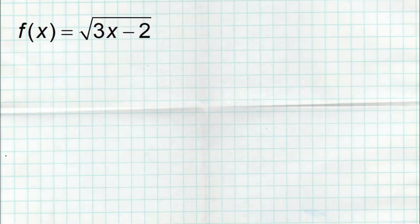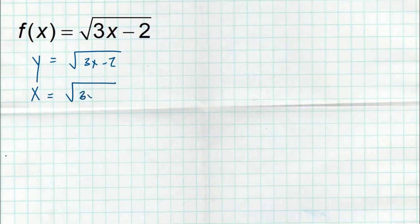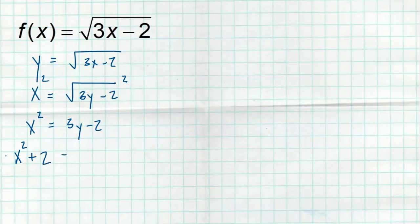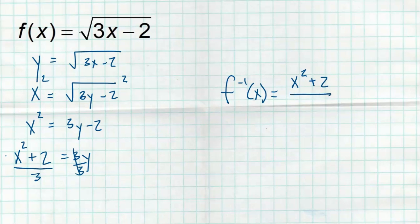Let's do another one with the analytical representation f(x) = √(3x − 2). First, change that f(x) to a y. Then switch all of the x's and y's. Now I need to solve: how do I get rid of the square root? I'm going to square both sides, so I get x² on the left and 3y − 2 on the right. Then I add 2 to get x² + 2 = 3y, and then divide everything by 3. Those threes cancel, and for my final step I identify this as the inverse function: f⁻¹(x) = (x² + 2) / 3.